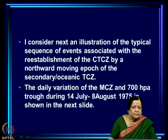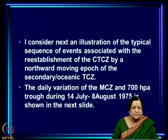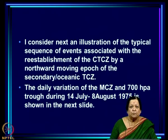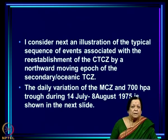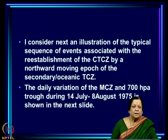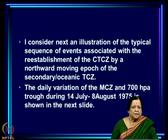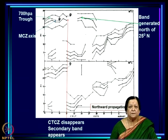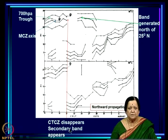Now I will illustrate the typical sequence of events associated with re-establishment of the CTCZ by a northward-moving epoch of the secondary or oceanic TTCZ, using the example of 14 July to 8 August 1975. Let us look at this case and see all the features mentioned.